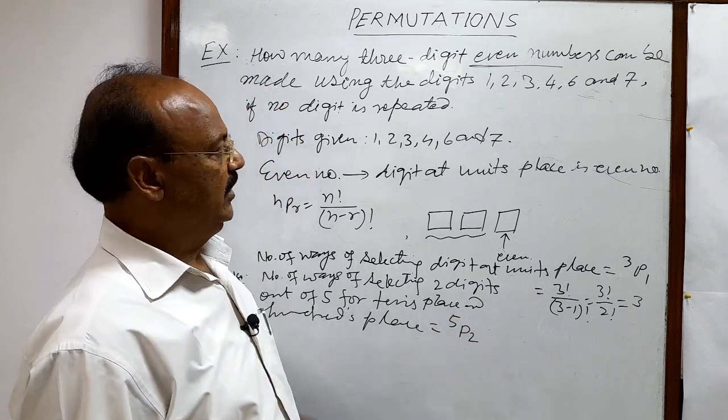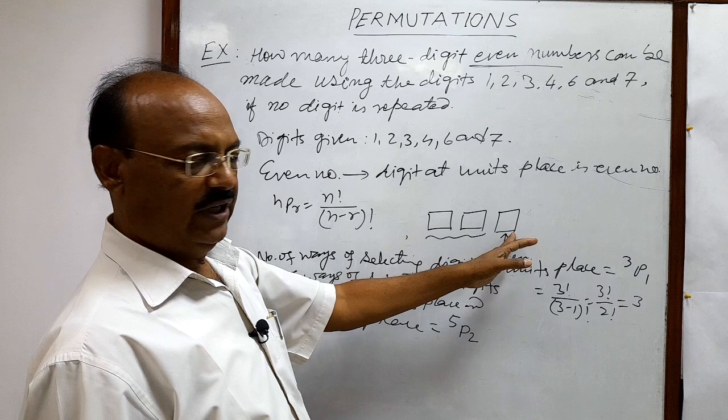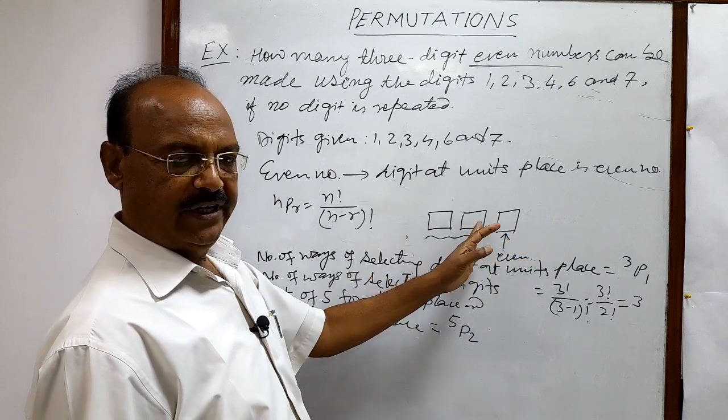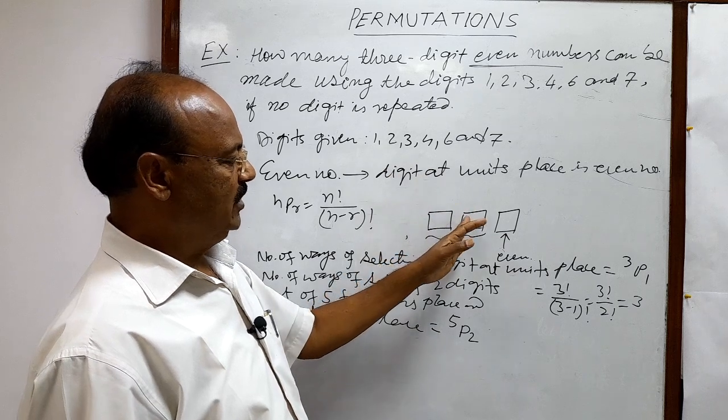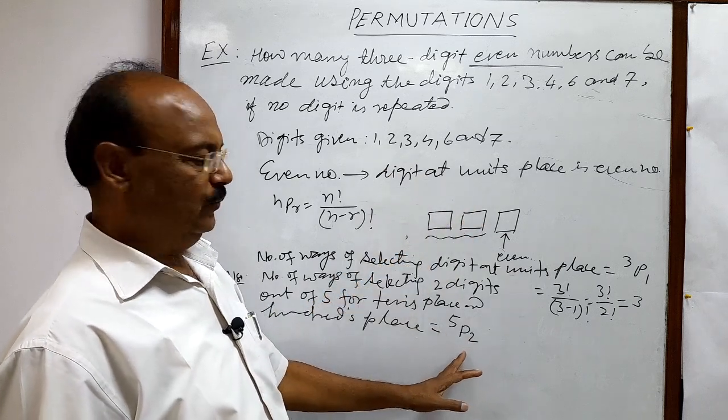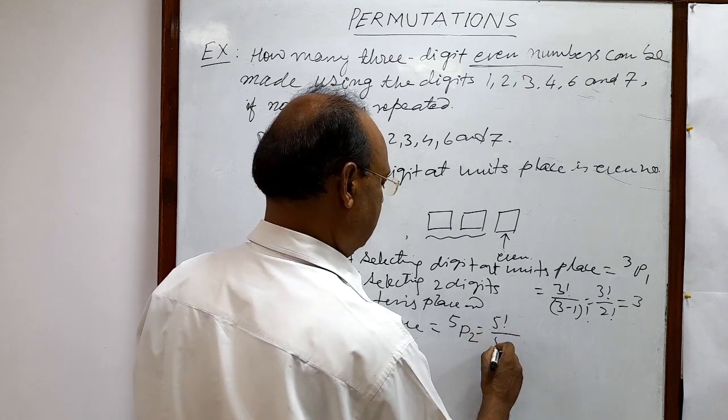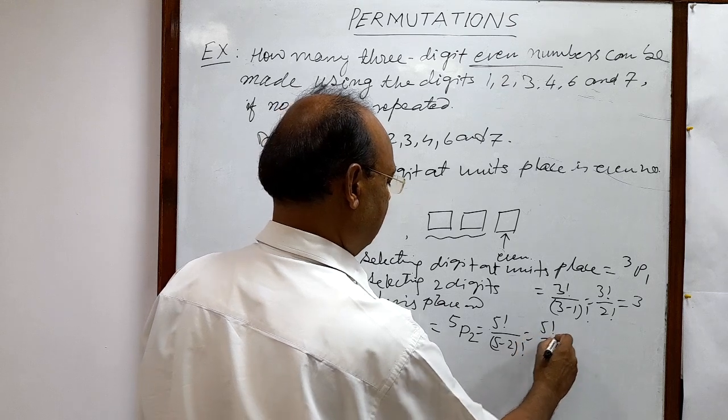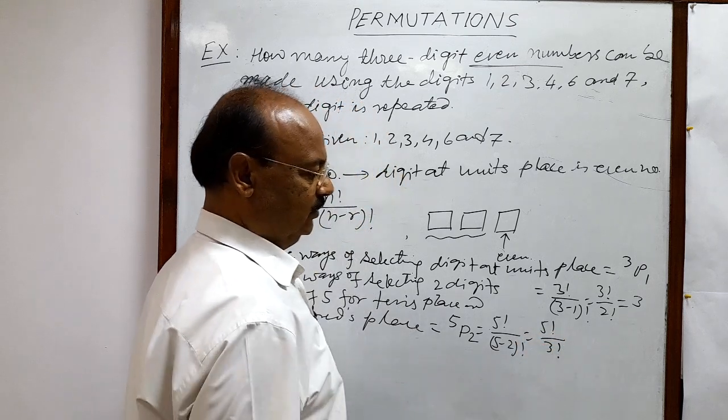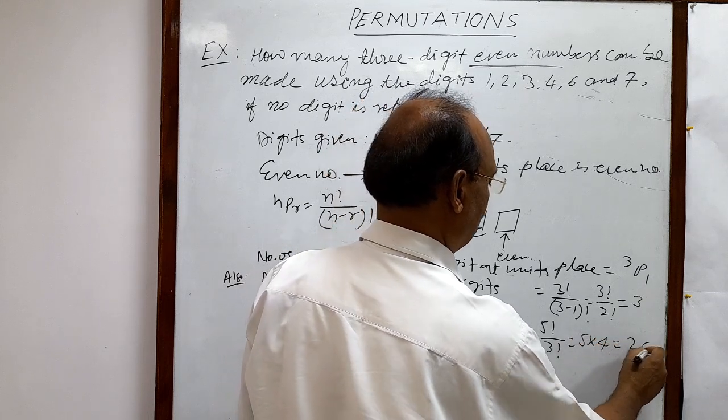Remaining total digits is 5. Out of this 6 we are using one even number that will not be repeated again. So remaining is 5 here and out of this 5 we have to select 2. Let us calculate. This is equal to 5 factorial by 5 minus 2 factorial means 5 factorial by 3 factorial. So this is equal to 5 into 4, this is equal to 20.